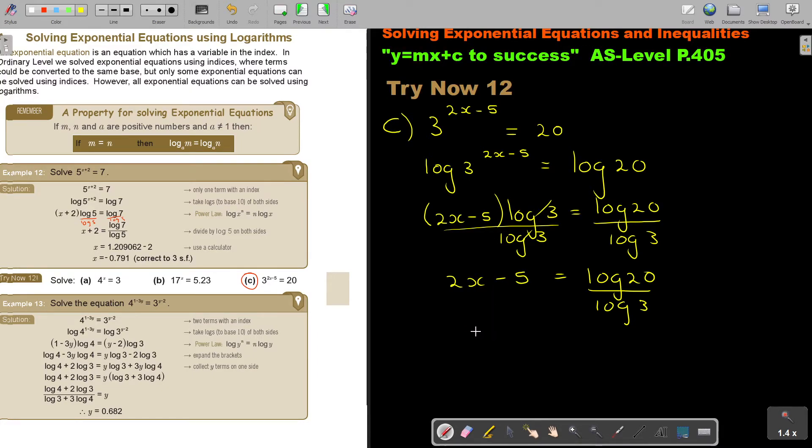I can take this 5 over. So 2x equals log 20 divided by log 3 plus 5. Take your calculator. Say log 20 divided by log 3 equals, plus 5 equals.